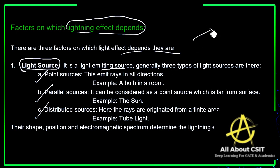A point source emits rays in all directions. For example, consider a bulb in a room — it emits light in all directions from one point. That is a point source.